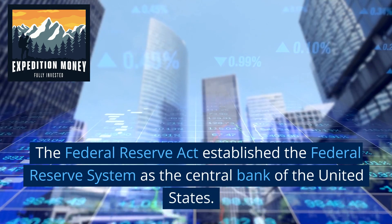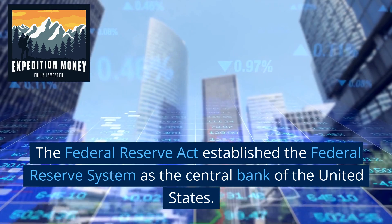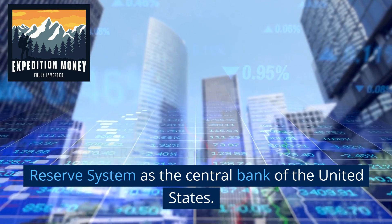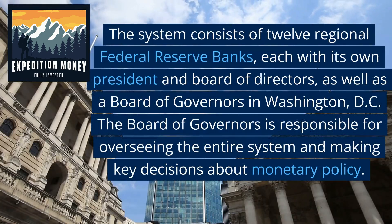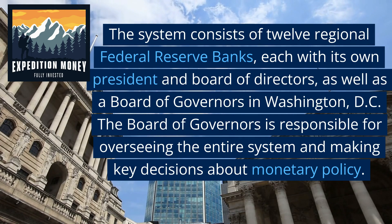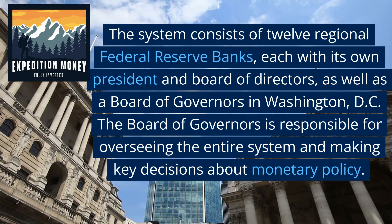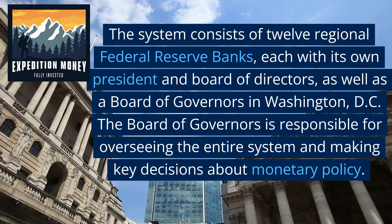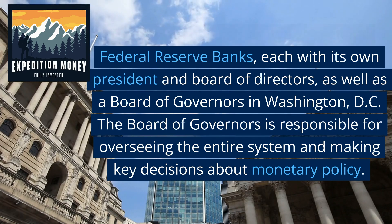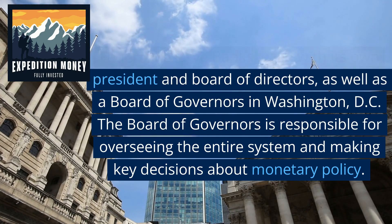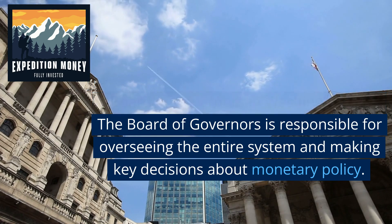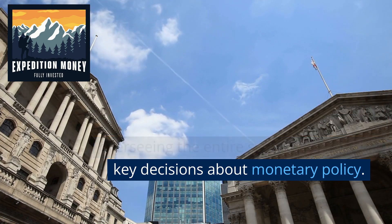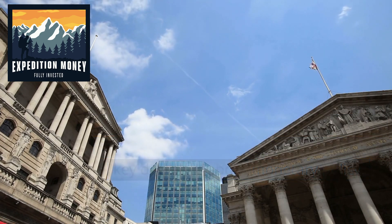The Federal Reserve Act established the Federal Reserve System as the central bank of the United States. The system consists of 12 regional Federal Reserve Banks, each with its own president and board of directors, as well as a board of governors in Washington, D.C. The board of governors is responsible for overseeing the entire system and making key decisions about monetary policy.